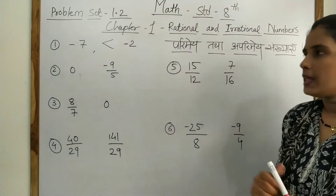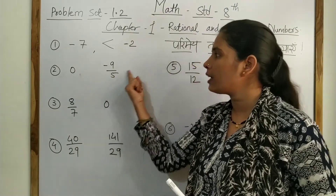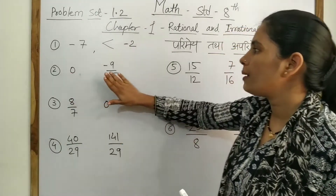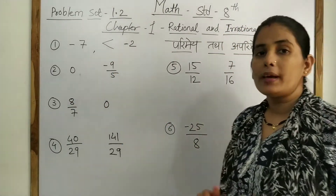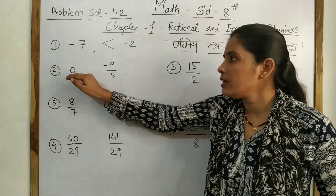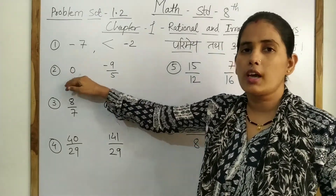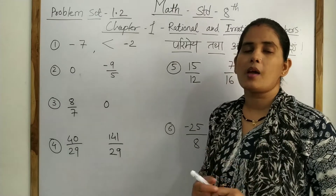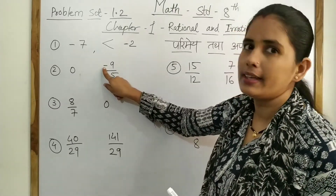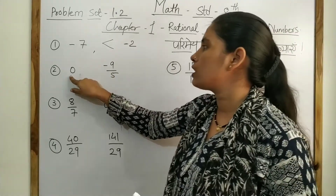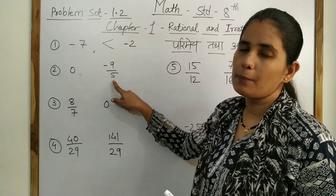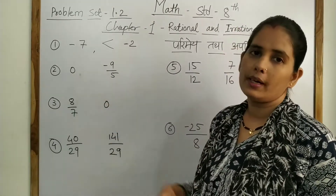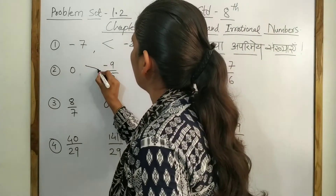Second question: here is 0 and here is minus 9 upon 5. Zero versus a negative number — 0 is always bigger than a negative number. So 0 is greater than minus 9 upon 5.